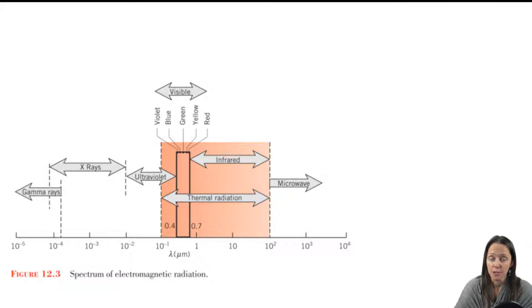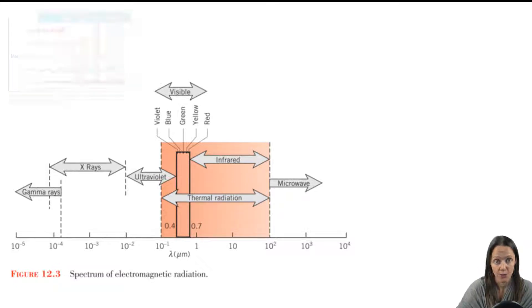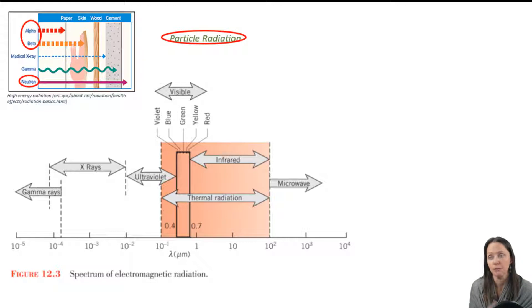We could talk about it in terms of particles, photons, or packets of energy. And when we think of nuclear radiation, that's often what we're talking about. We talk about alpha particles and beta particles and neutrons. We can also talk about things in terms of waves.